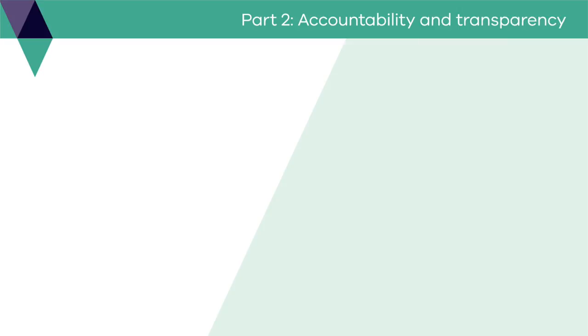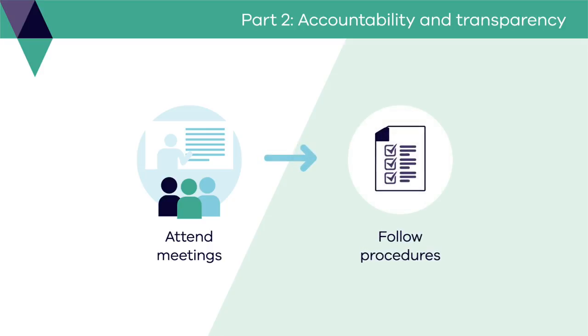Part 2. Accountability and transparency. This part of the induction program looks at your responsibilities as a committee member. Specific roles such as chair or secretary have additional responsibilities. As a committee member your main function is to attend and participate in committee meetings. Committee members are expected to attend all meetings unless there are good reasons they cannot. Each committee decides its own meeting times and schedules. Adhering to meeting procedures is important so that all committee members can participate in discussion and decisions made are recorded in the proper way.